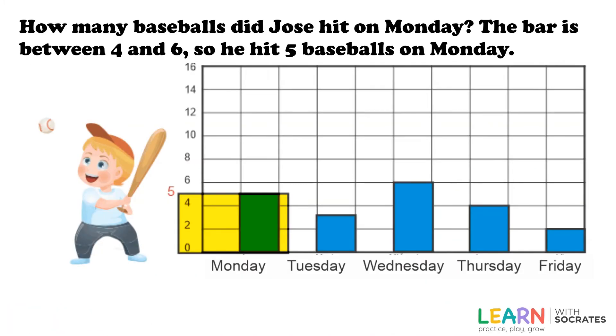How many baseballs did Jose hit on Monday? The bar is between four and six, so he hit five baseballs on Monday.